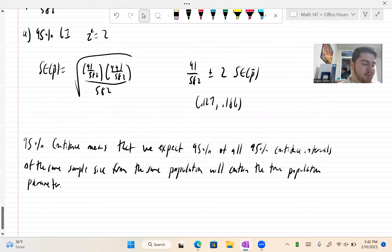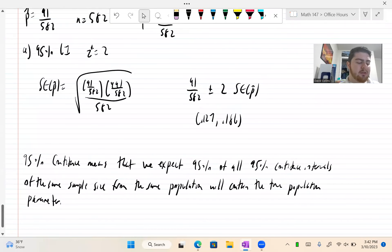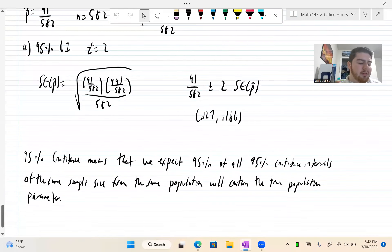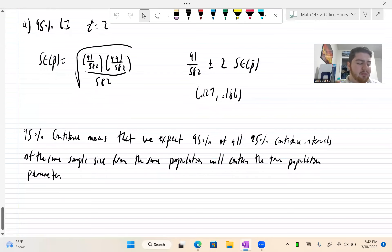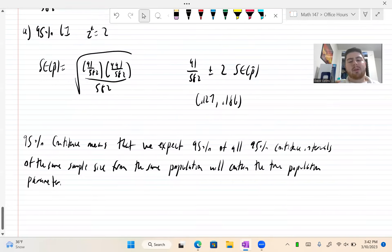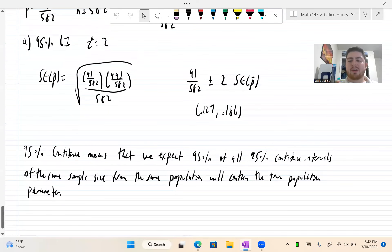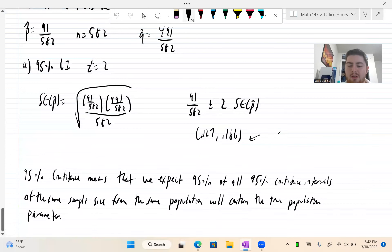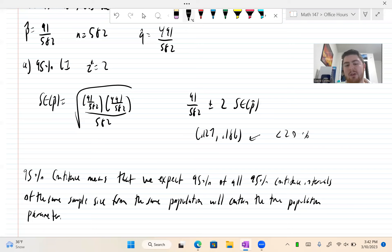Part D says a politician urges tighter restrictions on driver's licenses issued to teens because in every one out of five accidents a teen is behind the wheel. Does your confidence interval support or contradict the statement? We'd say it contradicts, right? Because both of these numbers are less than 20%. We are 95% confident that the true population parameter is between 12.7 and 18.6%. Maybe it's only 13%. The politician is just kind of jacking up the numbers.